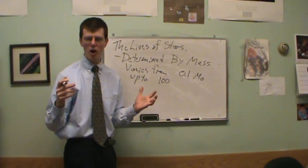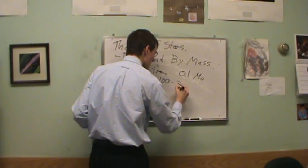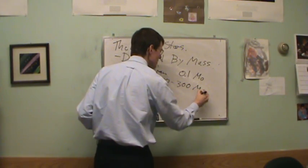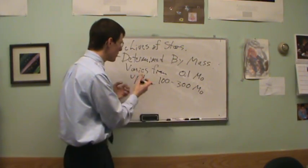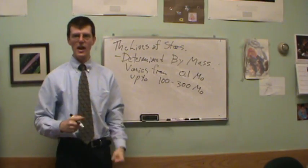100 or somewhere around 300 times the mass of the Sun. And this determines what they are. That sets the life of the star.